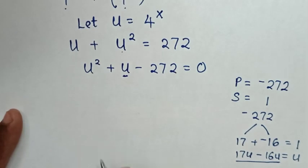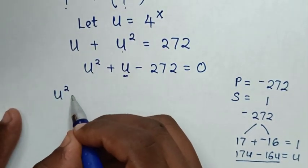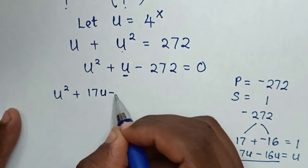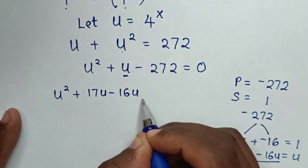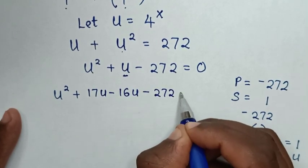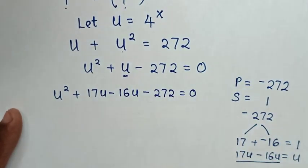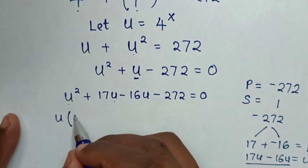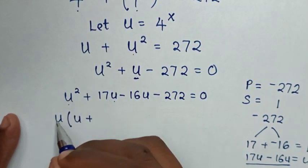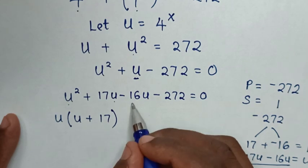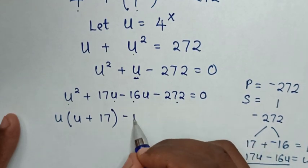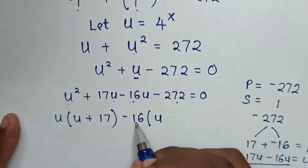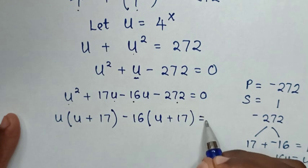Our equation becomes u squared plus 17u minus 16u minus 272 equals 0. Then u is common in the first two terms, so we take u out of the bracket: u times (u plus 17). In the last two terms, negative 16 is common, so we take it out: negative 16 times (u plus 17), equals 0.